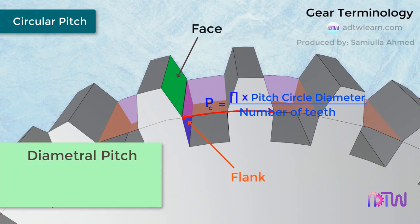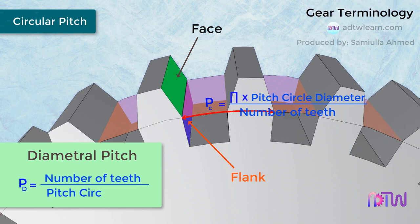Diametral Pitch. It is denoted by p_d, and given by: p_d equals the number of teeth divided by the pitch circle diameter.